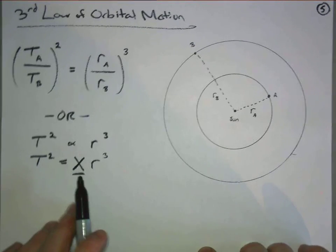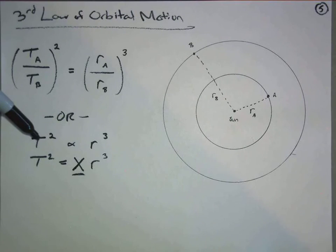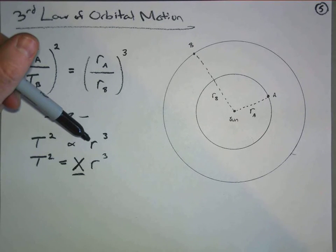Now don't worry too much about that, we're just showing that the square of the period of a planet is proportional to the cube of its orbital radius.